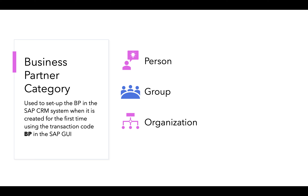Person refers to an individual with whom the company is doing business transactions. Group refers to a legal body with whom the business is being carried out, for example a married couple. An organization is a corporate organization who is the client or with whom the company is doing some business.